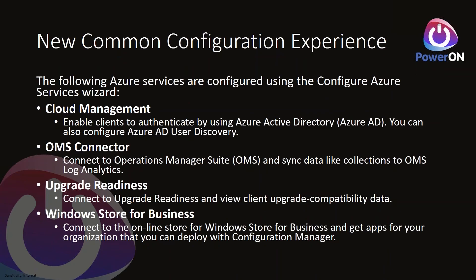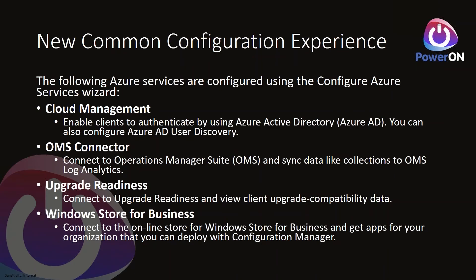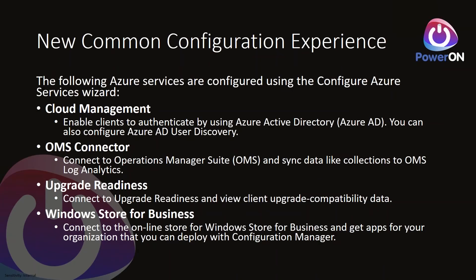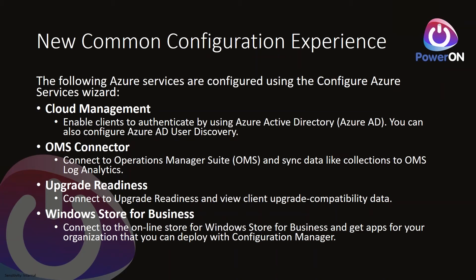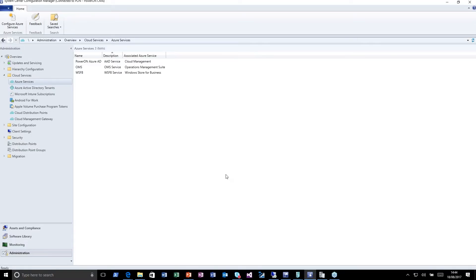Update Readiness looks at cumulative updates applied to Windows 10 to make sure they're being applied correctly and whether you're missing any. Microsoft has now wrapped these under a common configuration experience — a single management interface. So we have cloud management with Azure AD integration to find users, the OMS connector to sync collections to log analytics for update management scenarios, Upgrade Readiness to see which devices can go to Windows 10, and Windows Store for Business integration to pull down information from your private store.